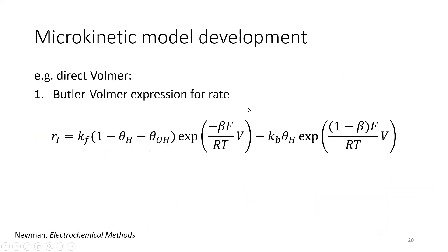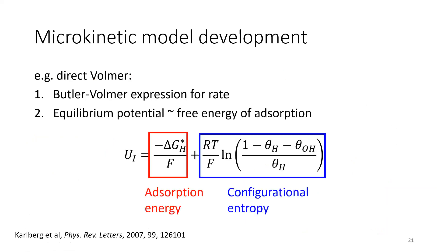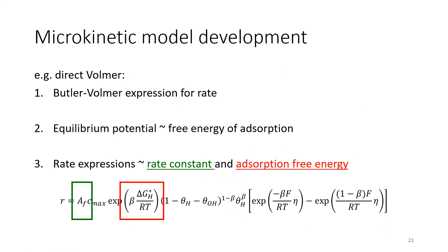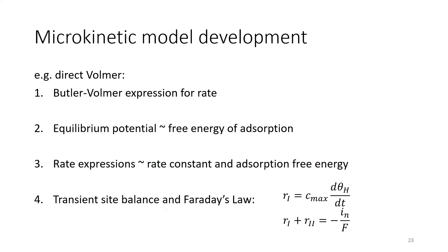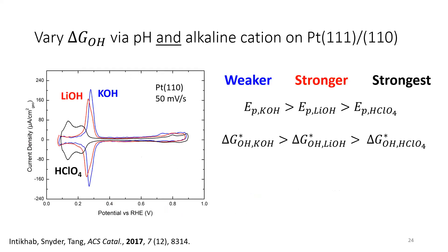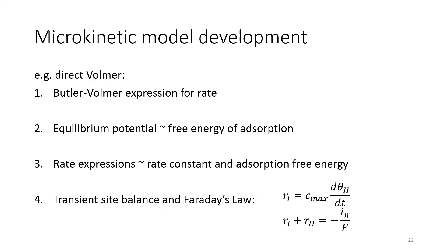So we're going to do microkinetic modeling. We do Butler-Volmer expressions for rate. We turn that equilibrium potential into a free energy of adsorption and a configurational entropy. And then we do some algebra, sort out that we get some rate constant and an adsorption free energy in the kinetic term. Put it together with a transient site balance and Faraday's law, put it into a computer and solve. But the thing about models like this is that they are only as good as the data you can fit them with.